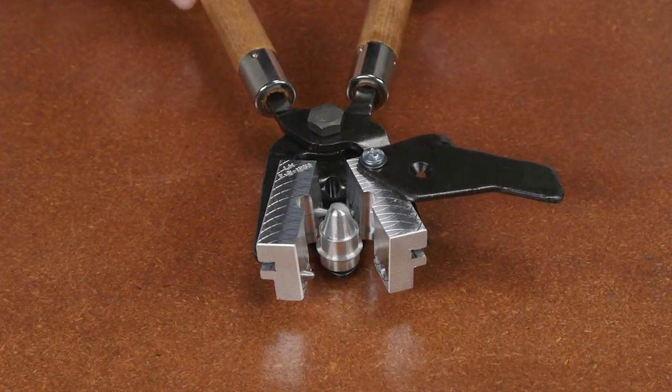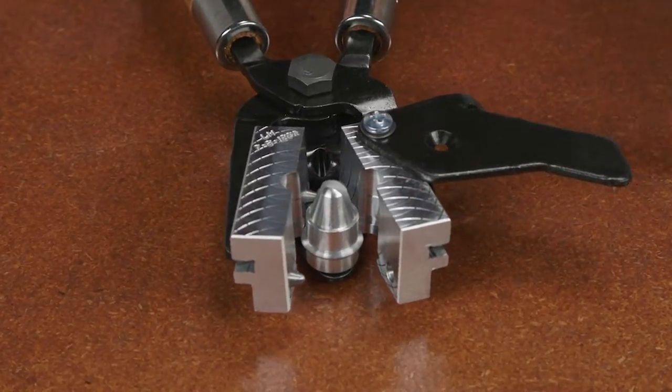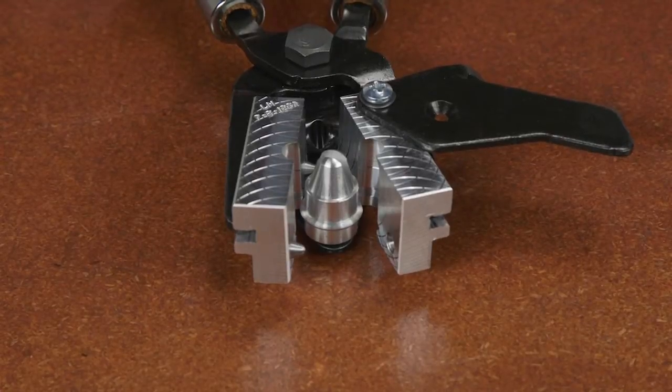The mold blocks feature tapered steel pin and cup alignment bushings, providing zero clearance parting line lock.